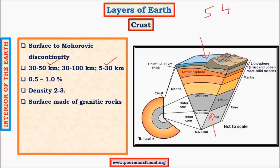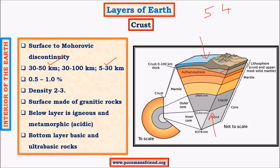The surface is made of granitic or basic sedimentary rocks. Below that, the upper layer has igneous acidic rocks with greater silica content. Beneath that are ultra-basic rocks with less silica. The continental crust is made up of silicates of aluminum — lighter material — and is called SIAL (Si-Al). The oceanic crust is made up of silicates of magnesium and is called SIMA. SIAL being lighter floats above, while SIMA being heavier sinks deeper into the crust.